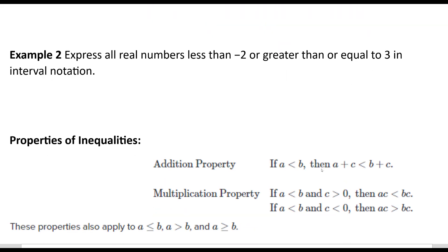Okay, example 2. Express all real numbers less than negative 2 or greater than or equal to 3. So here, this is an interesting way to write this because we have two different - if you look at this on a number line, we're looking at, here's negative 2, and it's less than, open circle shaded down.